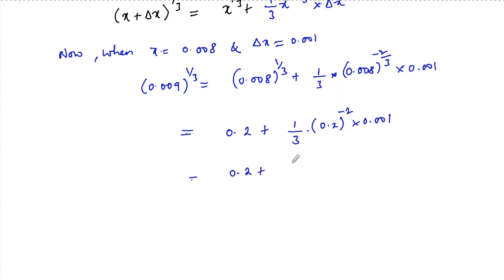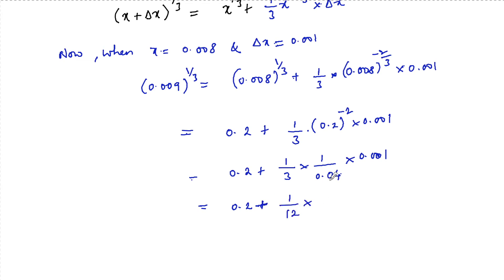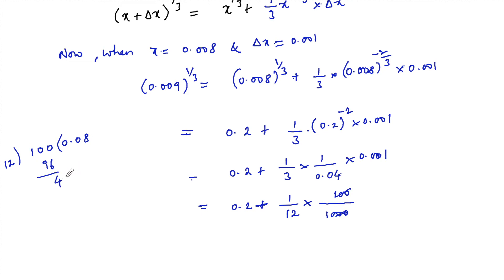Continuing the simplification: 0.2 + (1/3) · (1/0.01) · 0.001 = 0.2 + (1/3) · 100 · 0.001 = 0.2 + (1/12) · (1/10). Dividing 1 by 12 gives 0.0833 repeating.